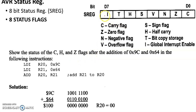IFLAG is the global interrupt enabled flip-flop, and this is used to control the entire interrupt system in AVR microcontrollers. For the entire interrupt system in AVR microcontrollers to be enabled, this global interrupt enabled flip-flop or register must be set. If this is zero, none of the interrupts in AVR will be enabled.